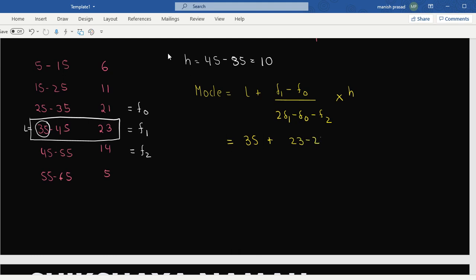21. 2 multiplied by x₁—what is x₁? 23. 2 multiplied by 23 will be 46. Perfect. What is f₀? 21. And what is f₂? 14.